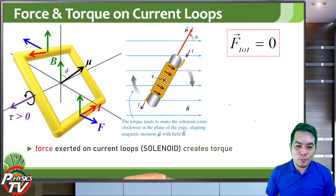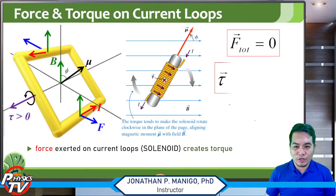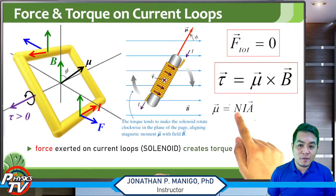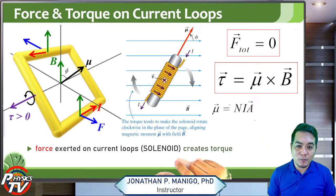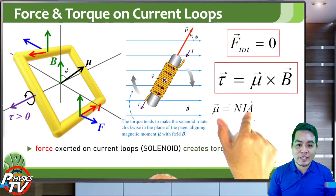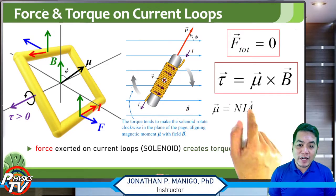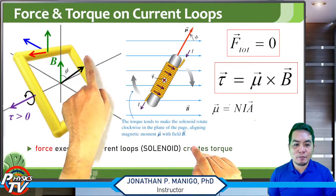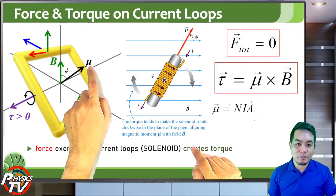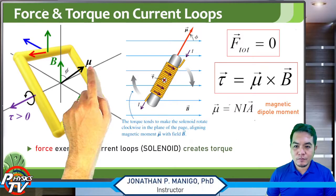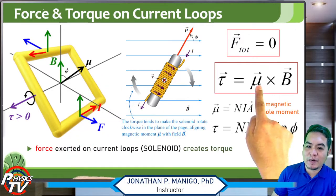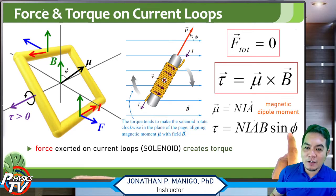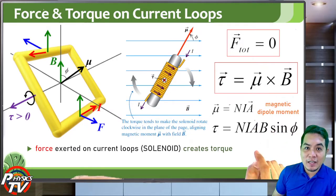The force exerted on a current loop — or a solenoid — creates what we call a magnetic torque. The torque is the magnetic dipole moment crossed with B, where the magnetic dipole moment μ is the number of turns N times the current I times the cross-sectional area A of the loop. The direction of the area vector is the same as the direction of the magnetic dipole moment, and it is always perpendicular to the surface of the loop.